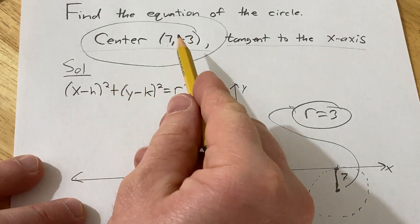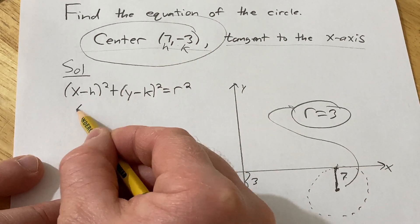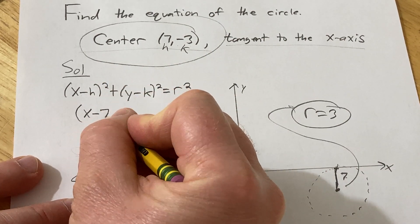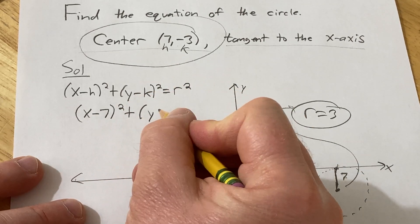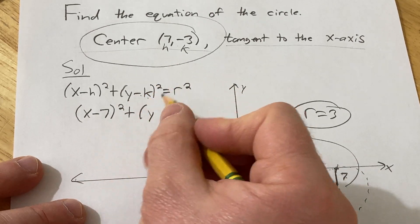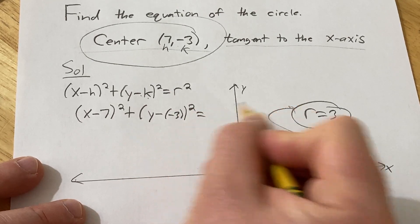So now we just plug everything in. This is your h and this is your k. So this will be (x - 7)² plus (y minus negative 3)² equals r². I'll show the work: minus negative 3 squared equals r squared.